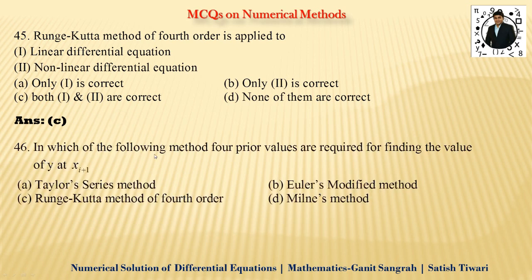46. In which of the following method four prior values are required for finding the value of y at xi plus one. Chaar prior value aapko pehle hi pata honi chahiye, tab hum solution nikalte hai. Ekdam famous method is, that is what, Milner's method. Okay, usme humko 4 prior value pata rehti. Tabhi hum y4 nikalte hai. Y1, Y2, Y3 aur y0 humko pata rehti hai, tab hum phir y4 nikalte hai uske andar. Toh option D yahan pe correct hai.